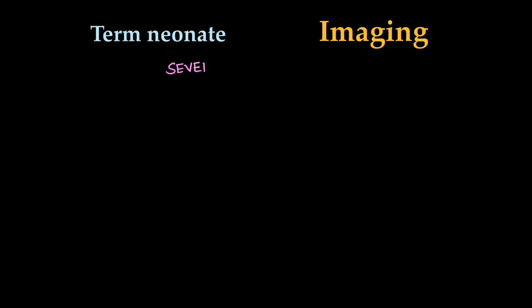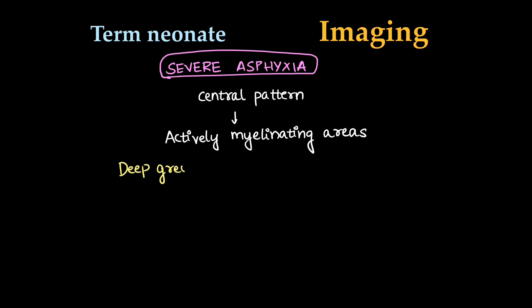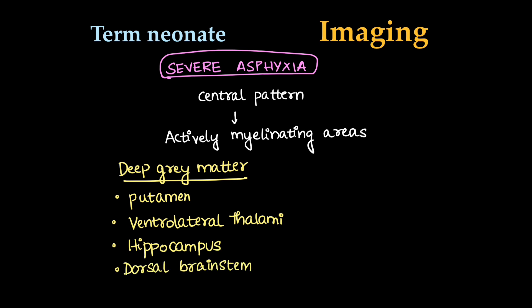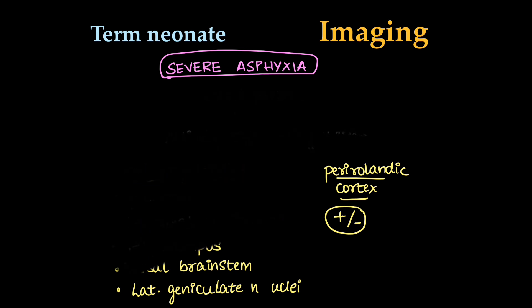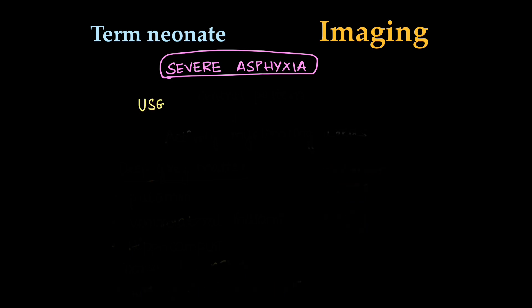First, we will discuss a term neonate, a child born after 36 weeks when severe asphyxia occurs. There will be a central pattern of ischemia. The areas which show active myelination will be damaged first. Such areas in a term neonate are deep grey matter areas like putamen, ventrolateral thalamus, hippocampus, dorsal brainstem, and lateral geniculate nuclei. Also, in cortex there is perirolandic cortex which may or may not be involved in term neonate with severe asphyxia.